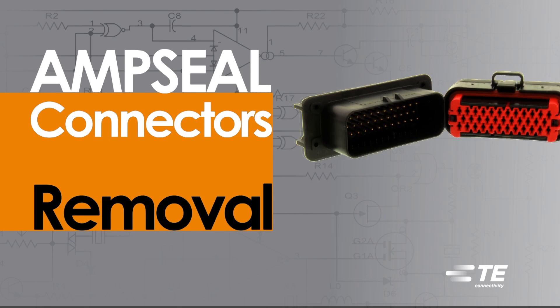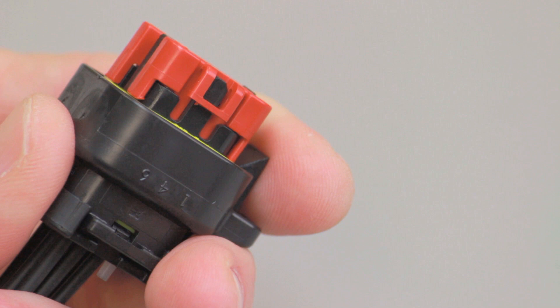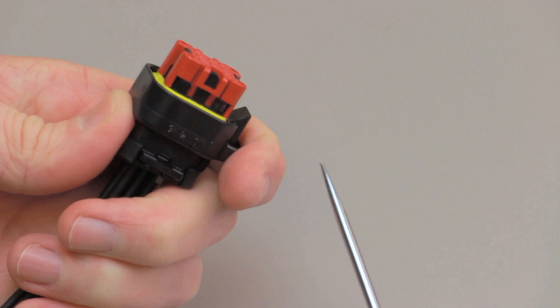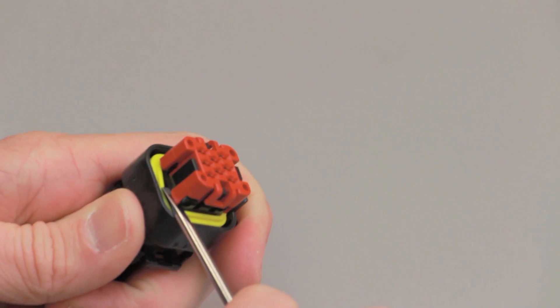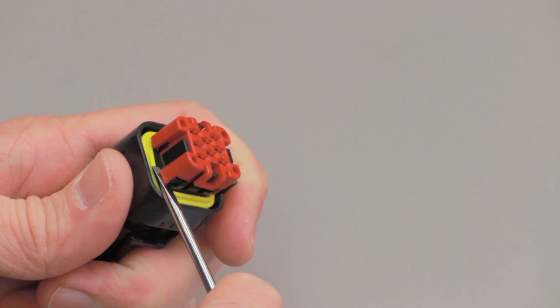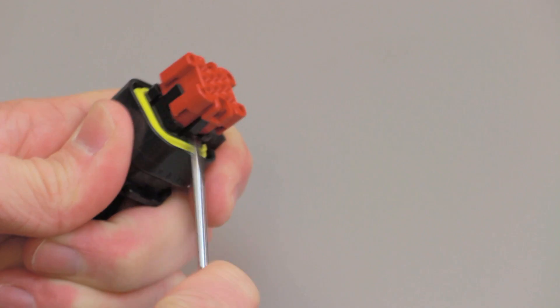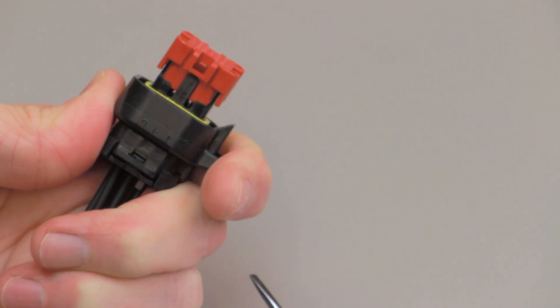AmpSeal Contact Removal. Connectors must be unmated to remove the contacts. Begin by inserting the tip of a DT-RT1 removal tool or a screwdriver between the edge of the receptacle contact housing and one corner of the wedge lock. Gently pry the edge of the wedge lock until it is released but not completely removed from the housing.